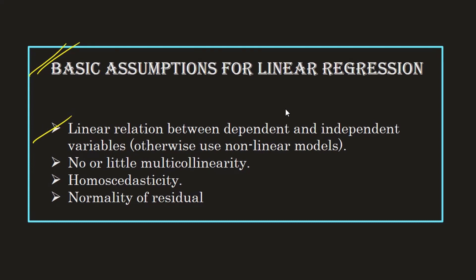The first assumption says there should be a linear relationship between the independent and dependent variables. If the value of your independent variable is increasing, then the value of your dependent variable should also increase or decrease — it can go in either direction, but there should be a linear relationship. As the independent variable increases, the dependent variable should not remain stagnant.